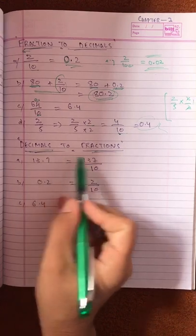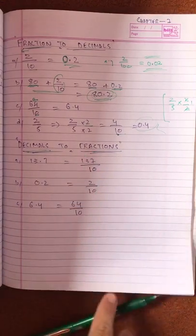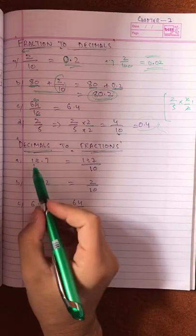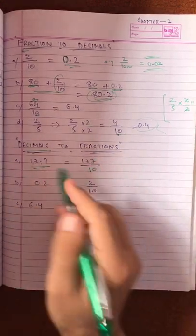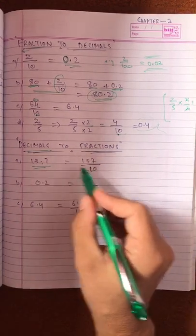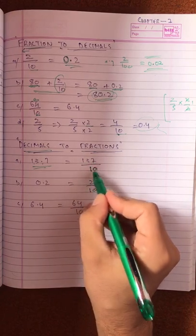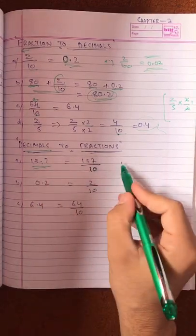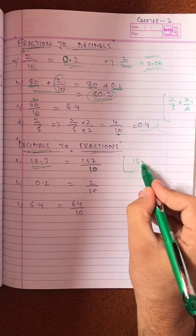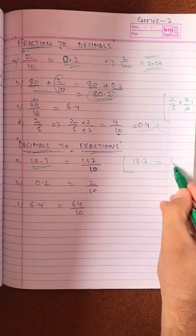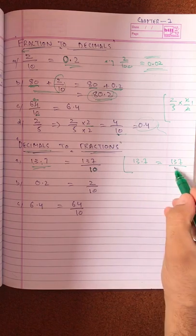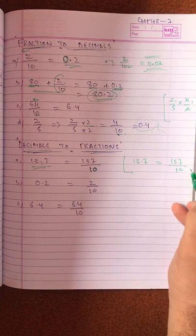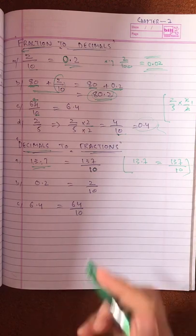Now let's move on. If we have a decimal, we have to convert it to fractions. Like 13.7, we write 137 without the decimal. The decimal moved one place, so we divide by 10 raised to one, which is 10. So 13.7 equals 137 over 10.